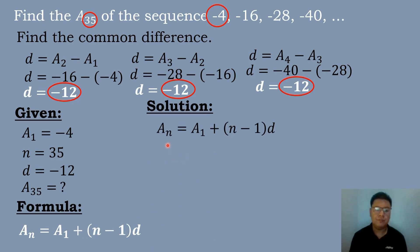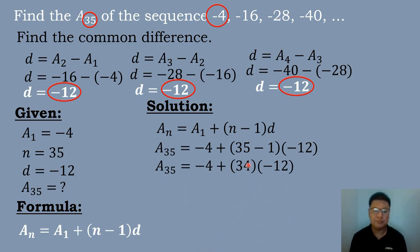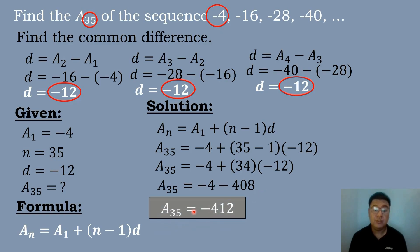Substituting: a sub 35 equals negative 4 plus the quantity 35 minus 1 times negative 12. Simplifying: a sub 35 equals negative 4 plus 34 times negative 12. 34 times negative 12 is equal to negative 408. So a sub 35 equals negative 4 plus negative 408, which equals negative 412.